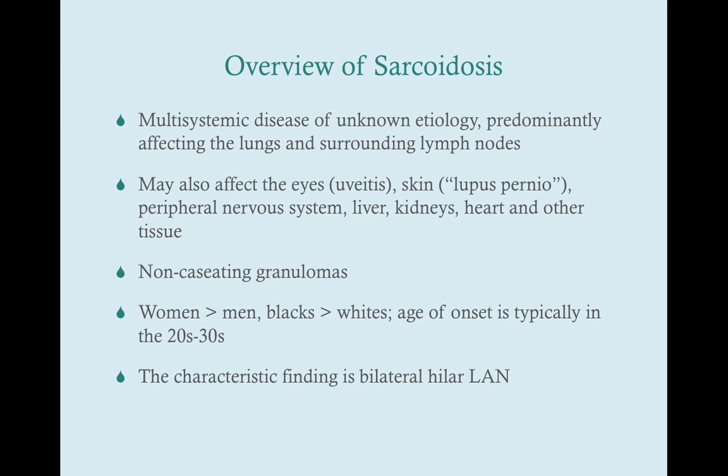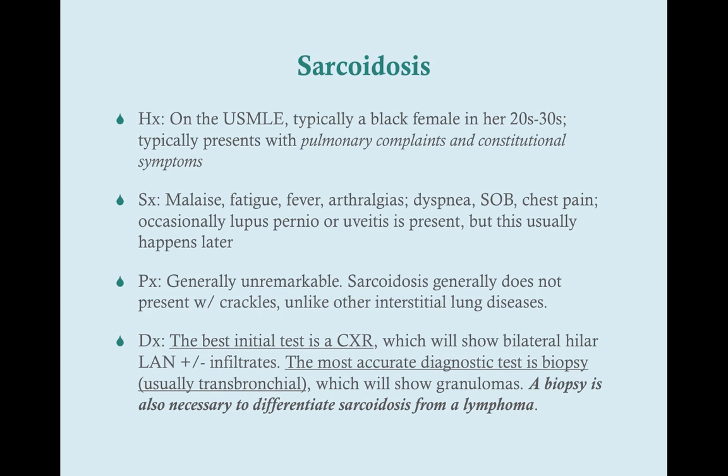When you see sarcoidosis on the USMLE, primarily you're going to think of lung symptoms, skin symptoms, constitutional symptoms, and ocular symptoms. Sarcoidosis histologically is non-caseating granulomas. Women are affected more than men, blacks tend to be affected more than whites, and the age of onset is usually in early adulthood — 20s to 30s. On the USMLE, it's typically going to be a black female in her 20s to 30s, though clinically it can be in pretty much anybody.